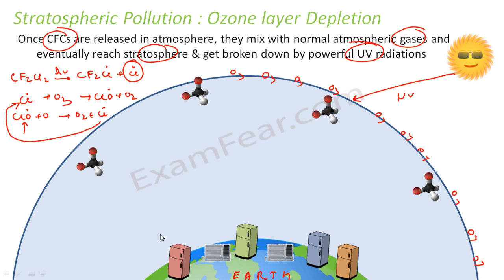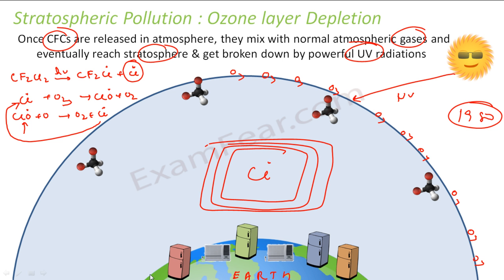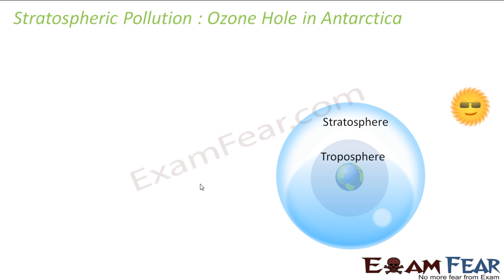The Cl free radical is produced because of CFC gases. This ozone layer depletion was first reported in 1980 over Antarctica, above the South Pole. This is what ozone layer depletion is. The Cl free radical is the culprit — it easily destroys ozone and regenerates itself, so a single Cl radical can consume millions of ozone molecules.